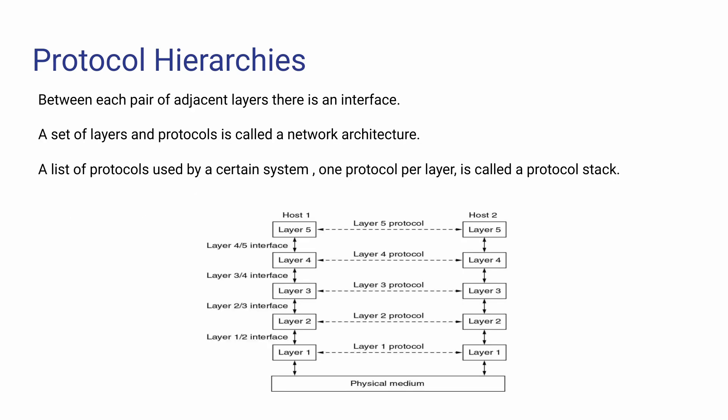For the diagrammatic representation, the adjacent or nearby layer pair forms an interface. The layers and protocols together set the network architecture. The list of protocols that a certain system uses is called a protocol stack. At the physical level, the medium and the pair connection form the interface.